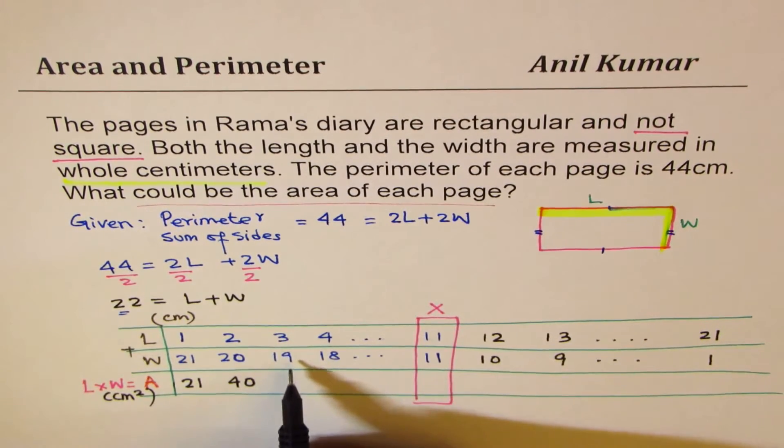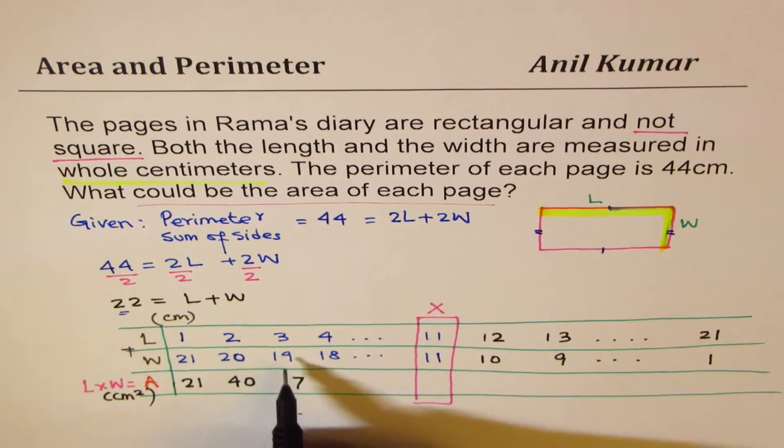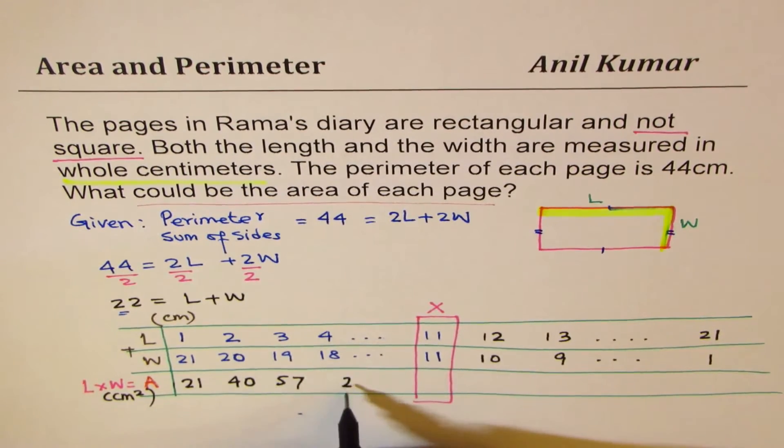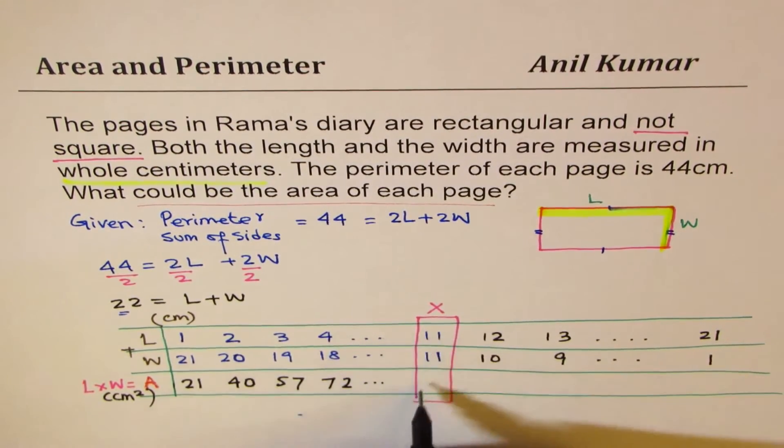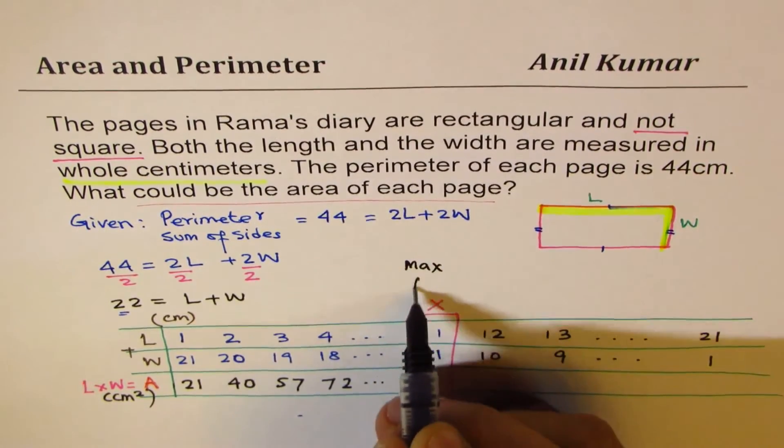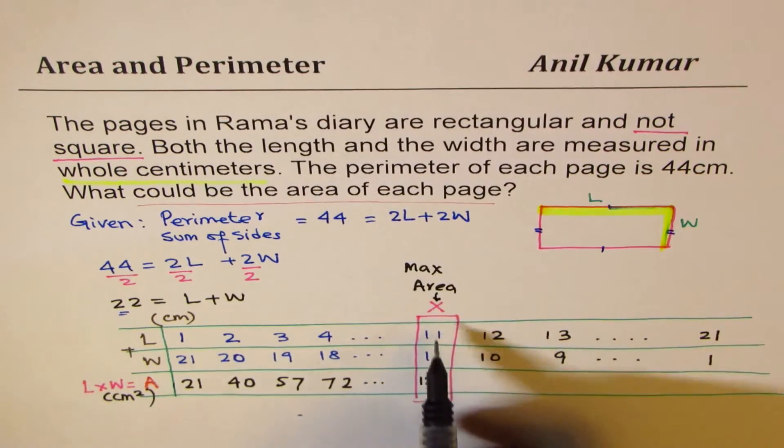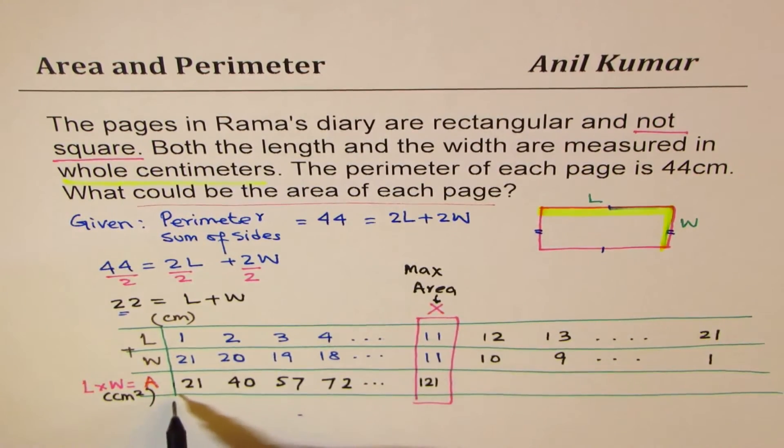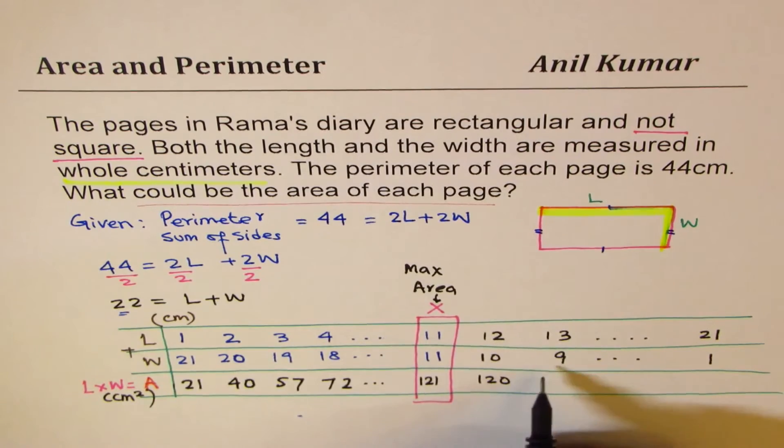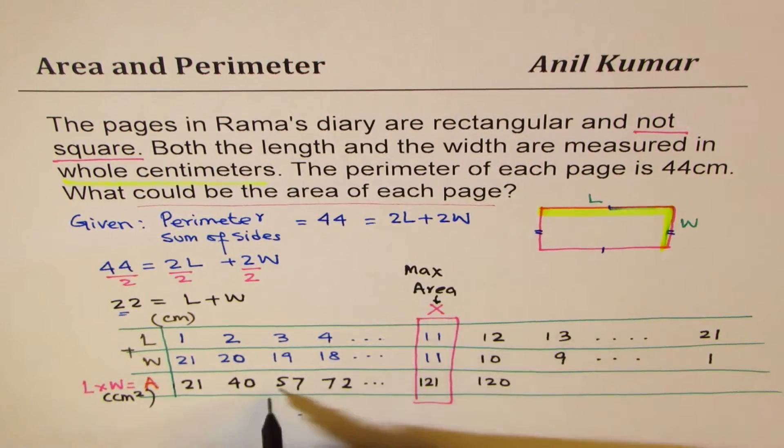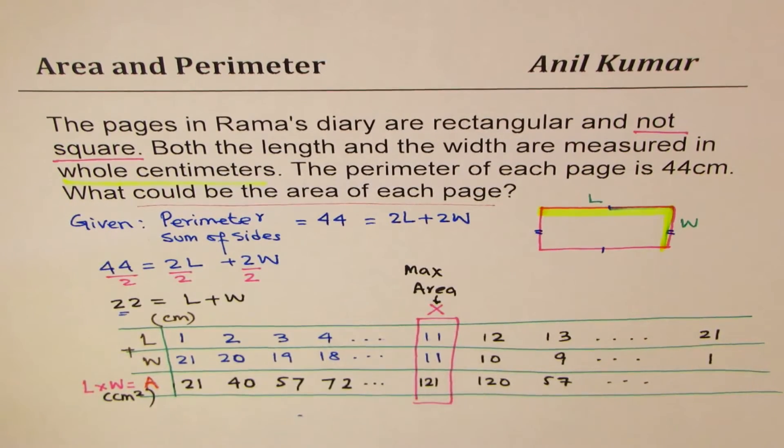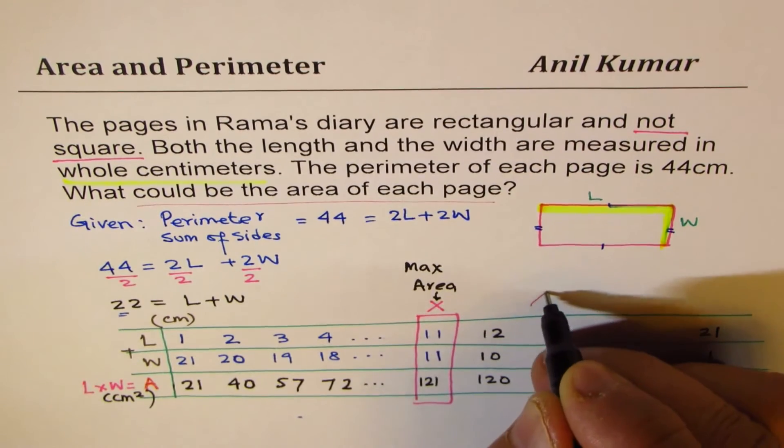And then we got 3 times 19, which is 57. And likewise, you can use your calculator. Now this is 121, which normally is maximum area. However, we are not considering that. And you'll see that it increases to 121 and then decreases. 13 times 9 is 117. These values will repeat. So we get an area which is kind of like this.